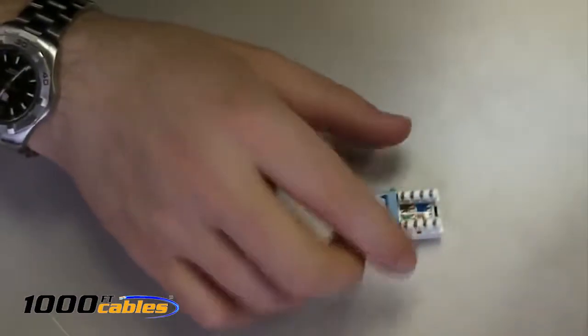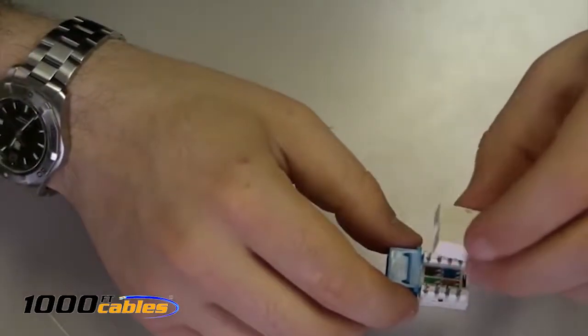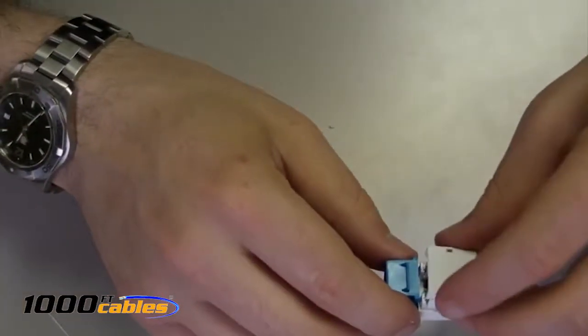When you open up your package, you'll notice you have two separate things. You have the actual keystone jack itself, and you have a dust cover which goes on the top of the keystone jack like so.